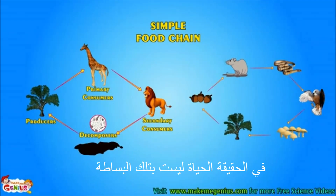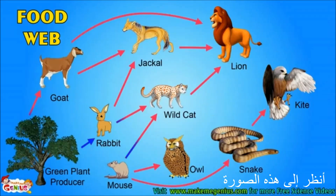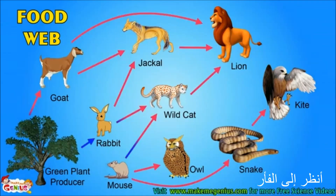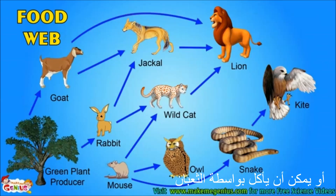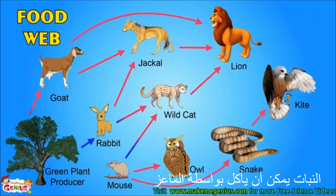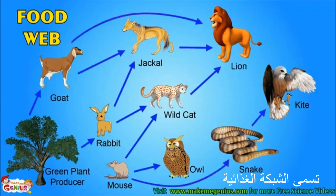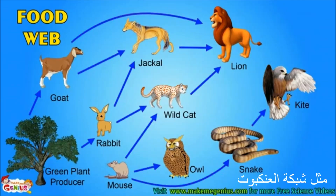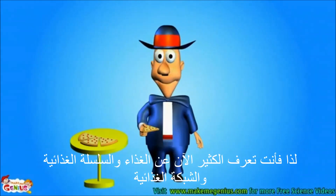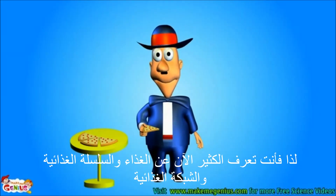Life is not so simple. Look at this picture — it is very complex. Look at the rat: it can be eaten by a cat, or it may be eaten by a snake. A plant can be eaten by a goat or by a rabbit. These kinds of complex food chains are called a food web, as they are very interconnected, like a spider web. So now you know a lot about food, food chain, and food web.